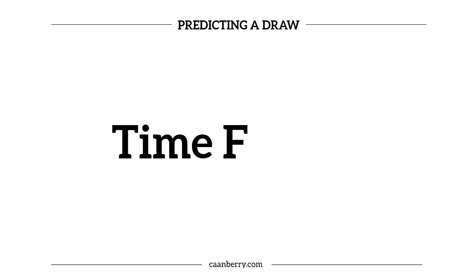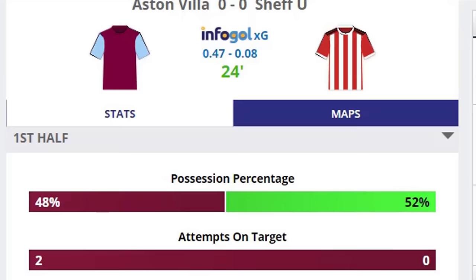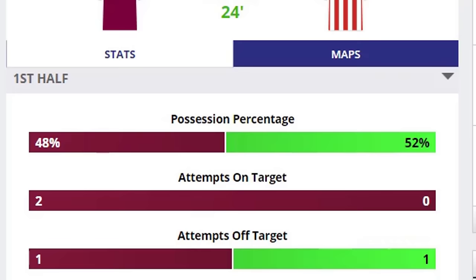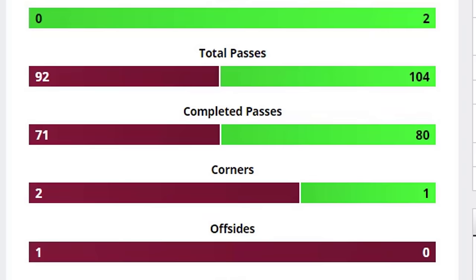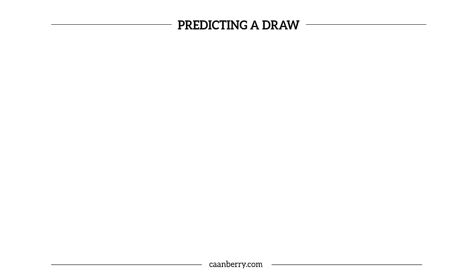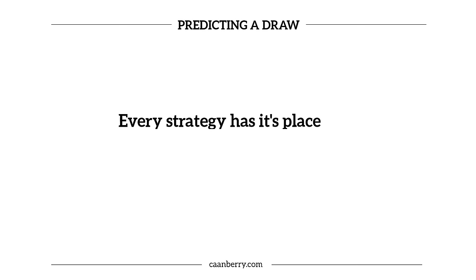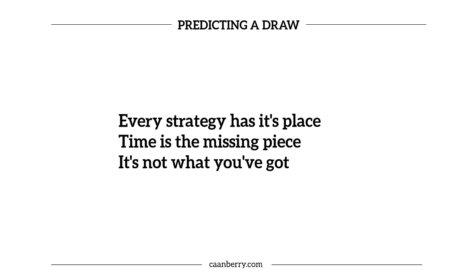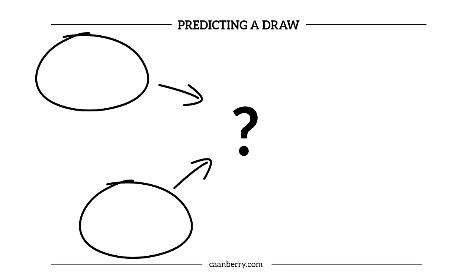On to time frames: prediction is a funny thing, but information is absolutely paramount. Info is time-relative, so it's far easier to predict a draw nearer to kick-off and once it's just started in-play for a segment of time, rather than predicting the score over the whole 90 minutes. If you want to predict it for betting purposes, remember that you can cash out your bets on pretty much any platform — it's better to use an exchange like Betfair because there's lower commission and you get better odds. Every strategy has its place, and time is a missing piece of the puzzle — it's not what you've got, it's how you use it.